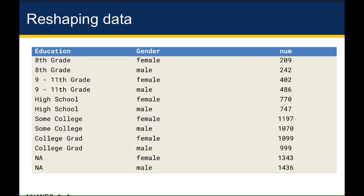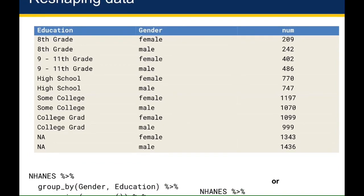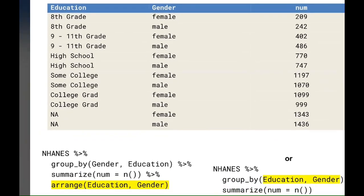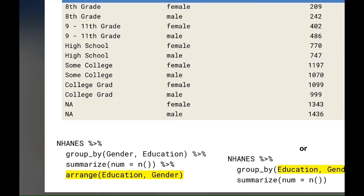Another way we could have done this is by sorting by education first and then gender, such that college degree entries are one row apart and female and male are one row apart. This is not my preferred data frame — the one on the right — but it's a little bit closer. If we had already grouped by gender and education and summarized to count rows, we could arrange by education and then gender using the arrange verb. Or another way would be to group by education first, then gender, and then summarize to calculate the counts.